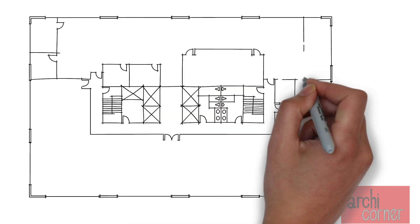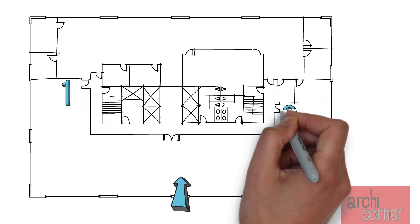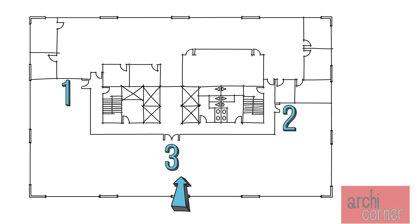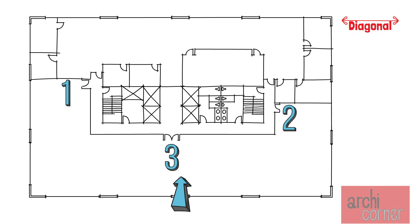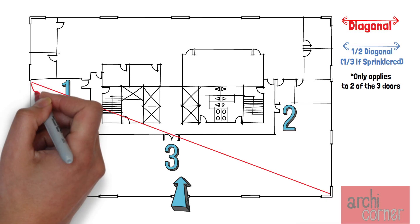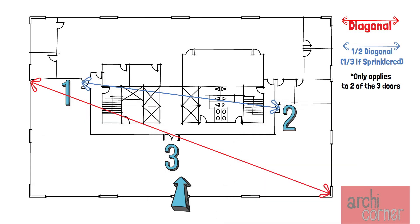Let's see how this works with a sample floor plan. Let's assume that this suite is required to have three exits — we do in fact provide one, two, three exits. Two of the doors have to comply with the same requirements we discussed when only two doors are needed. The diagonal dimension still applies and so does the separation requirement — but only for two of the three doors. In this example, we can separate doors one and two using half the diagonal dimension, or one-third if the building is sprinklered.